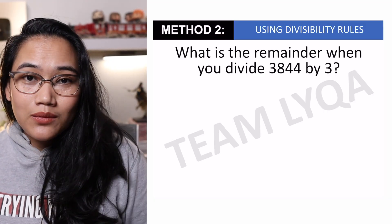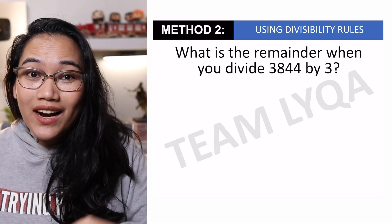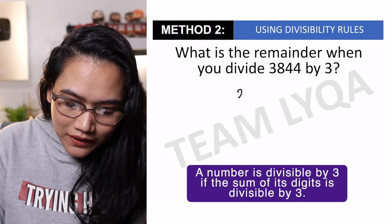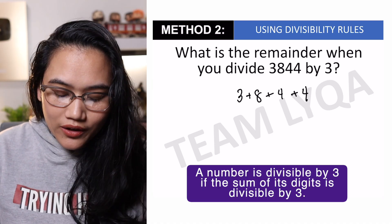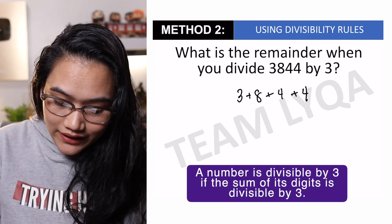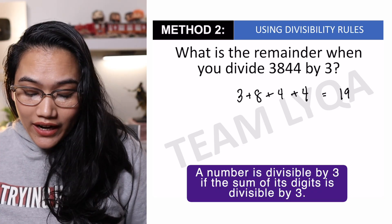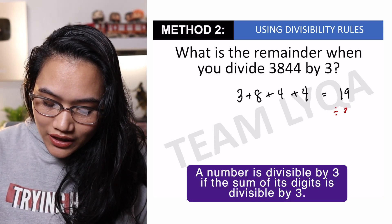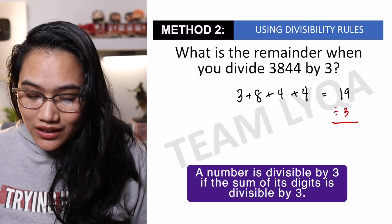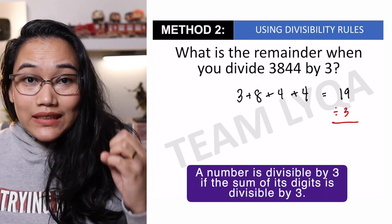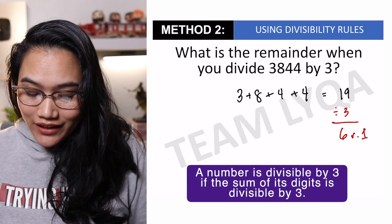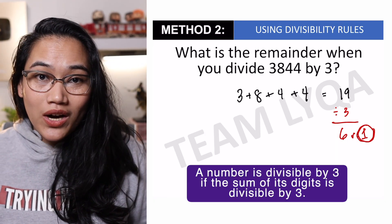Now, alam natin na ang divisibility rule when it comes to 3 — ibig sabihin, paano mo malalaman kung isang number ay pwede mo i-divide ng walang remainder by 3 — is by adding yung kanyang digits. So, ang ginagawa natin ay 3 plus 8 plus 4 plus 4. Kung i-add natin ito: 3 and 8 is 11, plus 4 is 15, plus 4 is 19. Now, ang ginagawa natin next is to divide this number by 3. Kasi, kung pwede natin siya i-divide sa 3, ibig sabihin walang remainder — the number is divisible by 3. Pero, as you can see, 19 divided by 3 — pag dinivide ko yan — meron siyang remainder. Ang sagot kasi dyan would be 6: 6, 12, 18. So, 6, remainder 1. Nakita niyo na ba yung pattern? Kasi, itong 1 na ito is the same dun sa remainder na nakuha natin sa long division kanina.